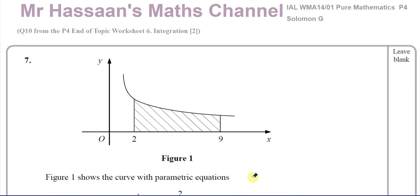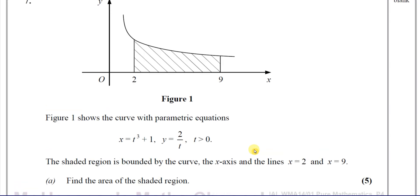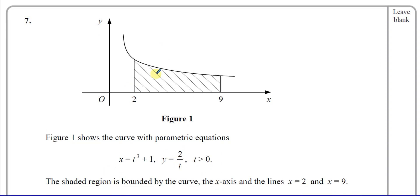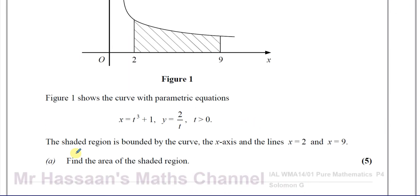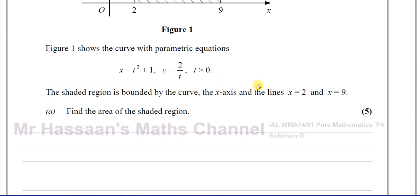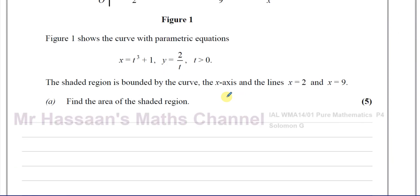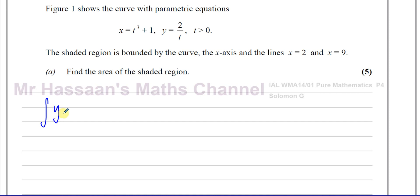Welcome back, this is Mr. Hassan's Maths channel. Here is question number seven from Solomon G paper — also question number ten from end-of-topic worksheet number six, Integration Two. We have a curve defined by parametric equations x equals t cubed plus one and y equals two over t where t is greater than zero. The shaded region is bounded by the curve, the x-axis, and the lines x equals two and x equals nine. We need to find the area of the shaded region. The area under this curve until the x-axis is given by the integral of the equation with respect to x within those limits.